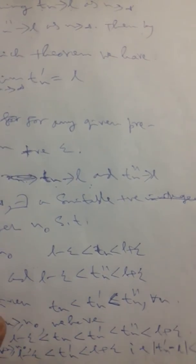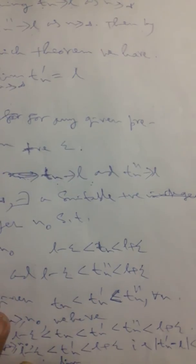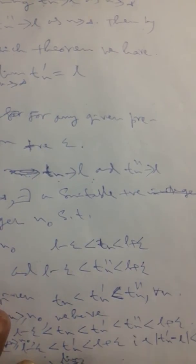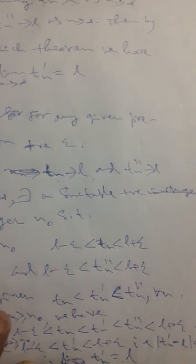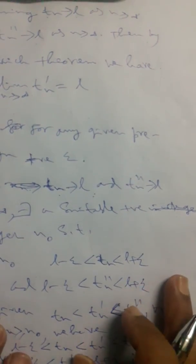And we maintain the same condition, that means for all n ≥ N₀ we get that |t′ₙ − l| < ε, which means that the limit as n tends to infinity of t′ₙ equals l. So we can prove the Sandwich Theorem.